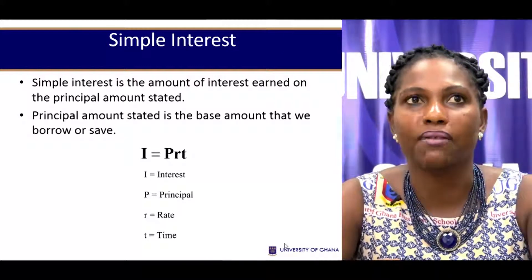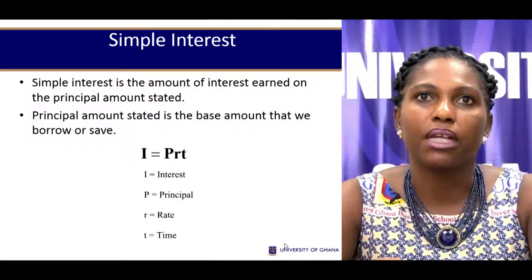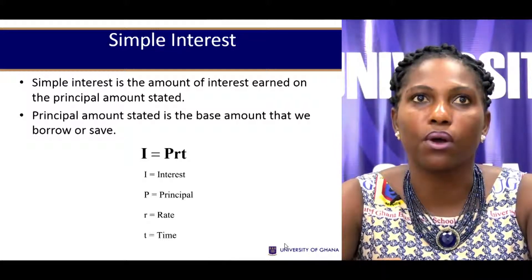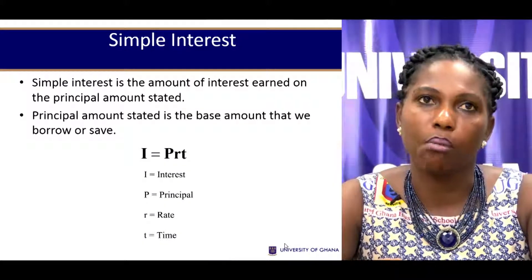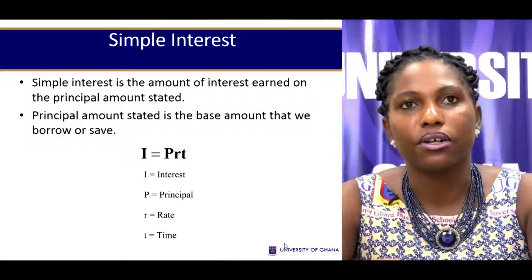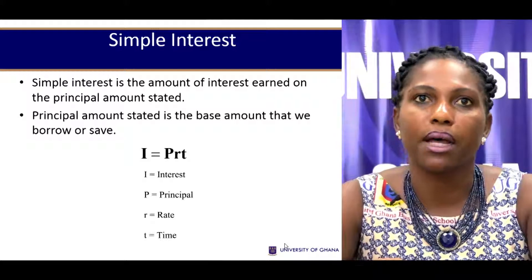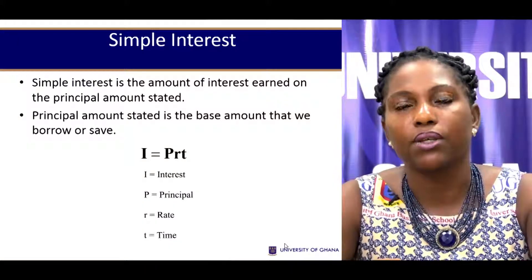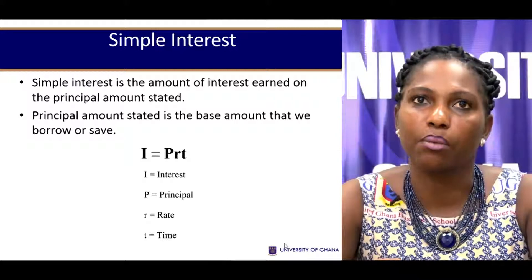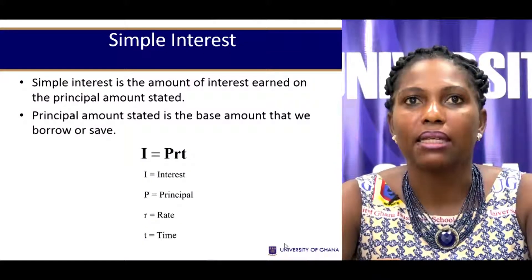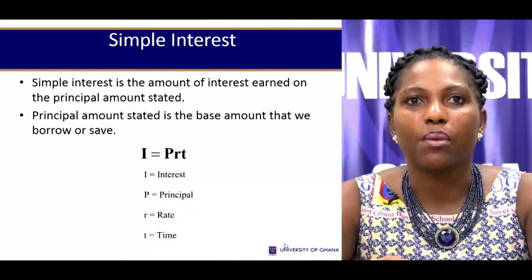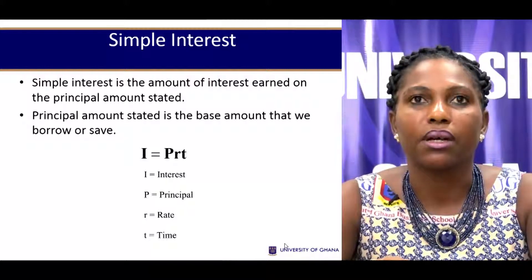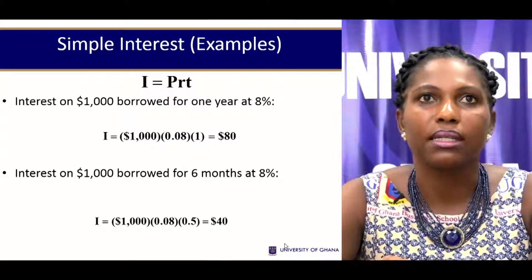Let's look at a simple case — simple interest. Simple interest is the amount of interest earned on the principal amount stated in a given transaction. The principal amount stated is the base amount that we either borrow or save. Interest flows from the principal, the rate of return quoted for that investment or borrowing, and the time horizon attached to the transaction. So interest at any point in time is: Principal × Rate × Time. That refers to simple interest.